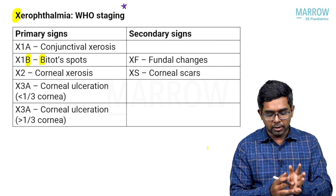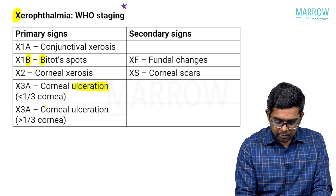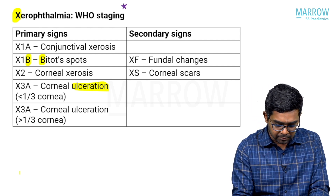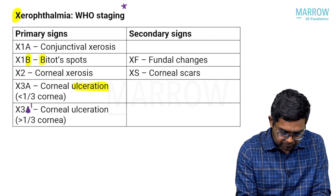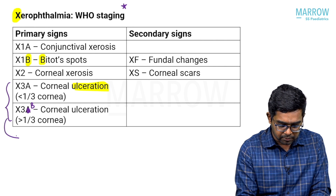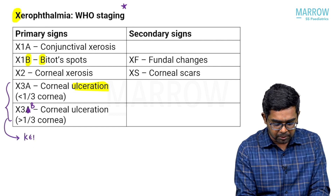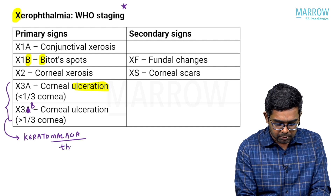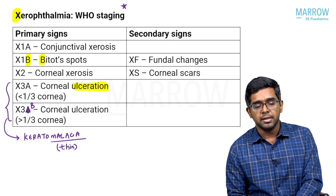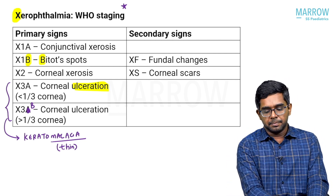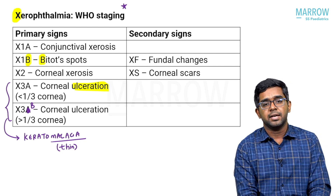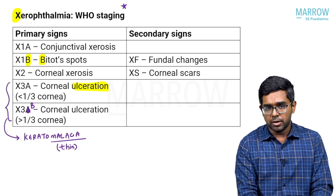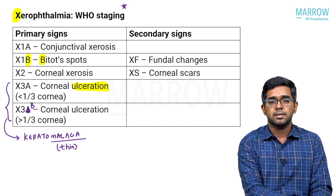X3 is severe corneal involvement characterized by corneal ulceration: X3a is ulceration involving less than one-third of the cornea, and X3b is ulceration involving more than one-third — both categories can also be called keratomalacia, as malacia refers to thinning. Secondary signs are the severe features: XF is xerophthalmic fundus, and XS refers to corneal scarring.